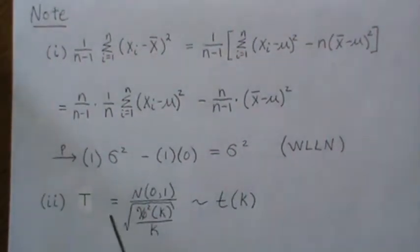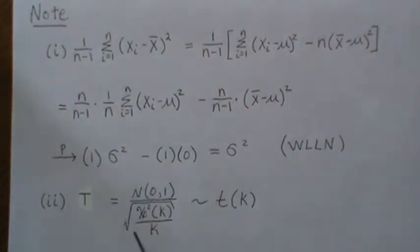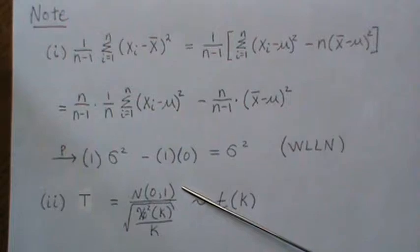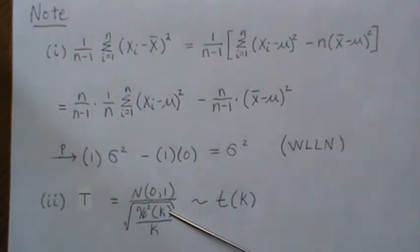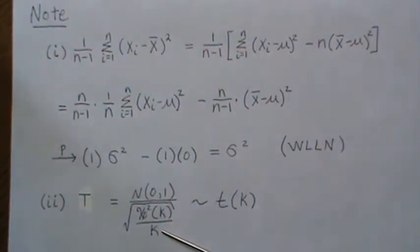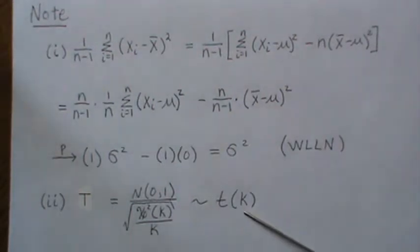Now if we look at a t distribution, which generically is written as a standard normal random variable over the square root of a chi-squared random variable with k degrees of freedom divided by its degrees of freedom, this is how you define a t distribution with k degrees of freedom.